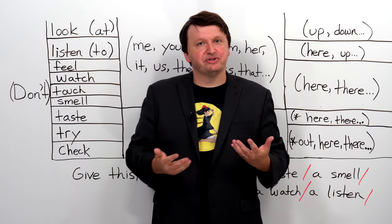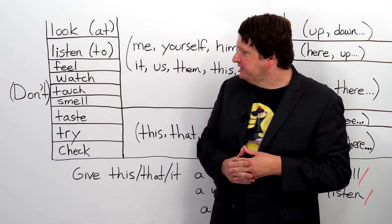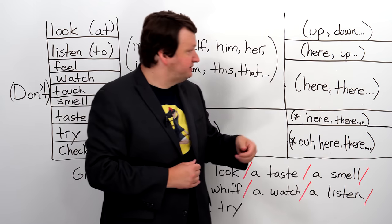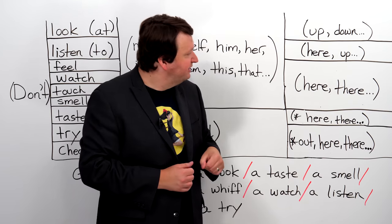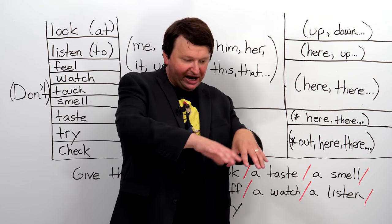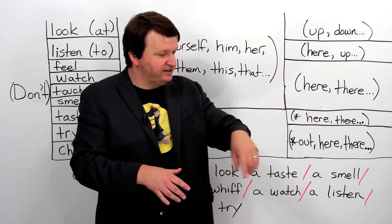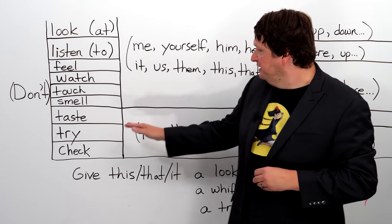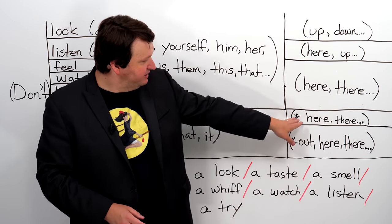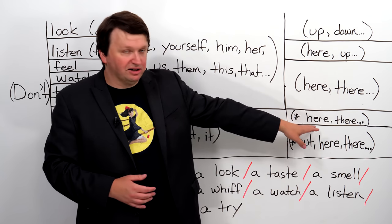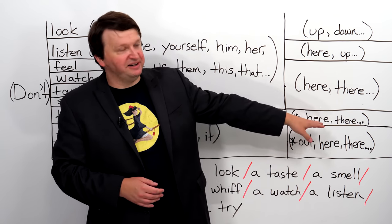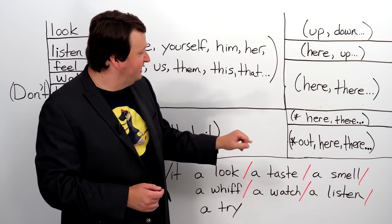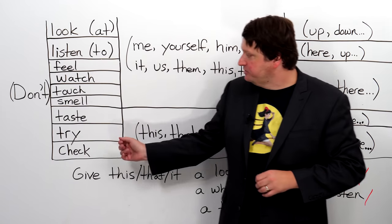Taste — with your tongue. This is typically for food. You can say taste this, taste that. Taste here, taste there — if you have a plate with a variety of foods, though it's not very common to say taste here or taste there. It's possible technically, but I put an asterisk there because it's not common.